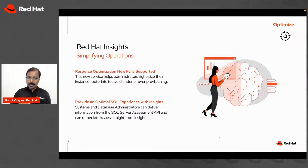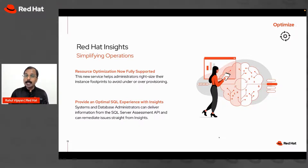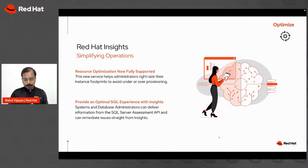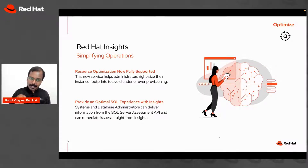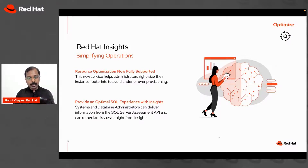The third theme is optimization, via Red Hat Insights. Red Hat Insights is a software-as-a-service capability that comes with Red Hat Enterprise Linux, providing predictive analytics to help you resolve issues proactively. Insights will proactively tell you about issues you didn't even know existed — not only identifying them but also providing remediation capabilities.